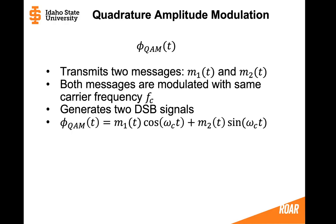This type of modulation — quadrature amplitude modulation, or QAM — is modulated into a signal we call phi_QAM(t) in the time domain. This signal contains two messages: message 1 and message 2. Both messages are modulated with the same carrier frequency fc, generating two double-sideband signals. The time domain representation includes message 1 modulated with a cosine wave and message 2 modulated with a sine wave.